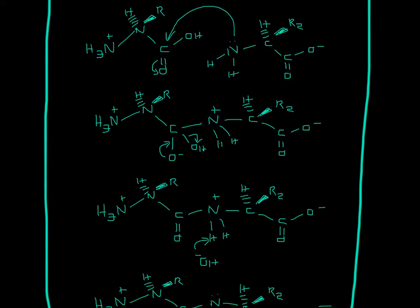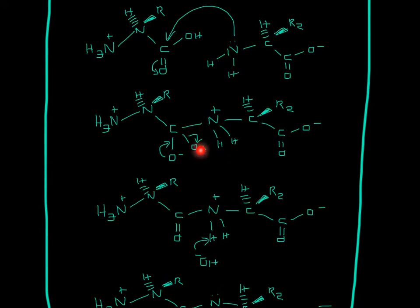So then what will happen is the negative charge can come back down and form a double bond and kick off this OH. It still has this positive charge on the nitrogen, and the OH is still here, but now it has a negative charge because it's gone from this carbon.